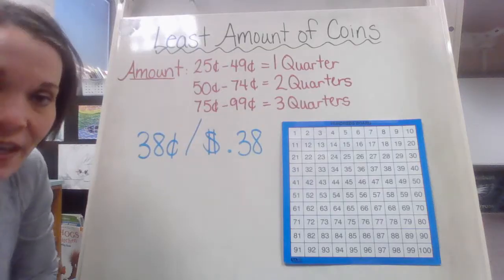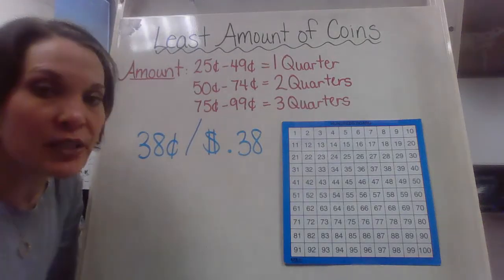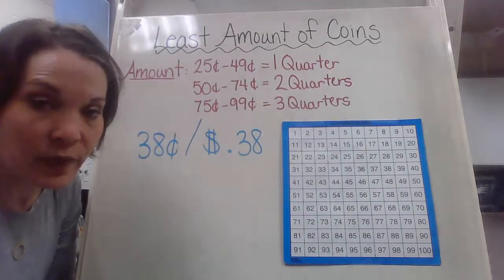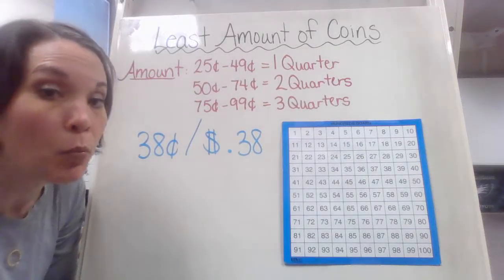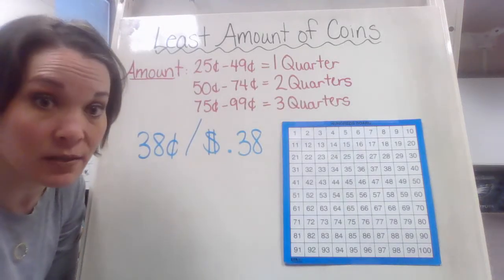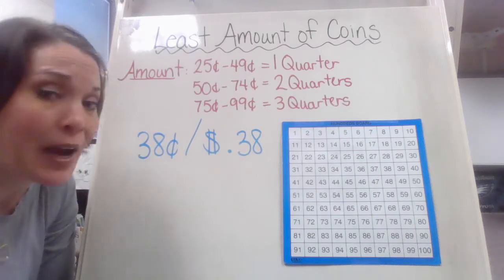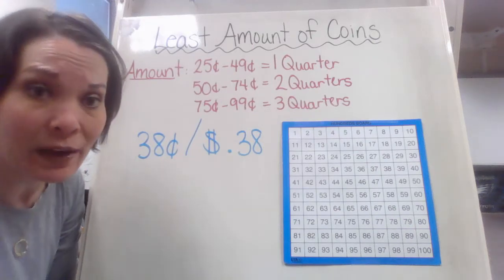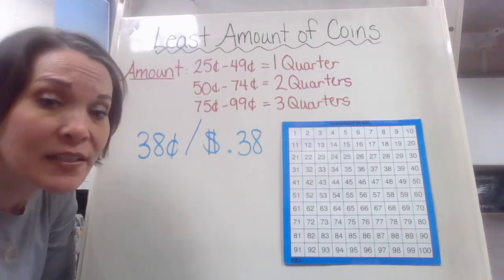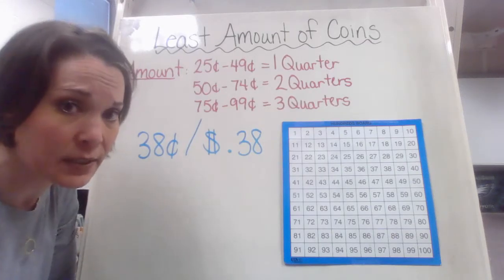When you're dealing with different kinds of coin amounts, you could make them in multiple types of ways. You can make them all with pennies, you can make them with dimes, nickels, and pennies, or you can make them with quarters, dimes, nickels, and pennies. It all depends on the amount that you have.